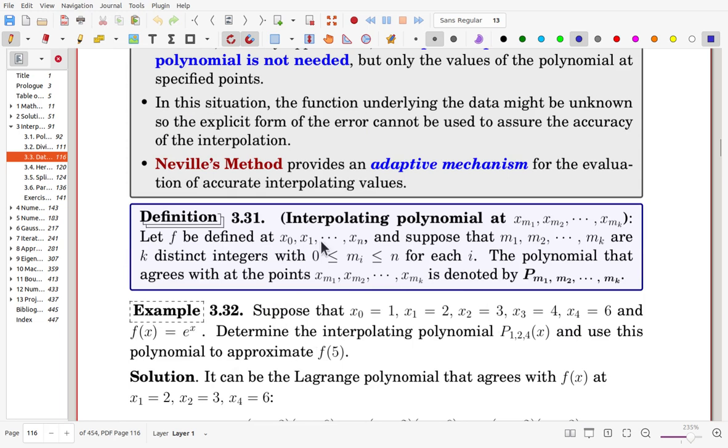Here we have a definition for interpolating polynomials. Function f is defined at x1 to xn, and now m1 to mk are distinct integers between 0 and n. The polynomial that agrees with at the points from xm1 to xmk is denoted by P sub m1, m2, mk. This is a notational definition. Once the interpolating polynomial is made along with such points or part of the points, then the polynomial is denoted by the point index used for subscripts.